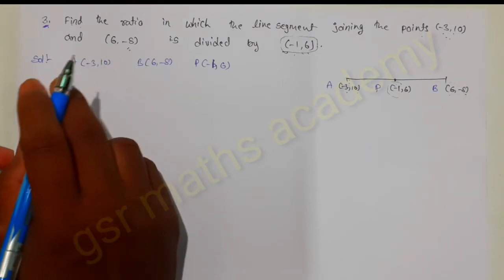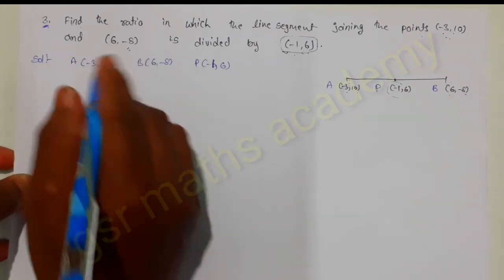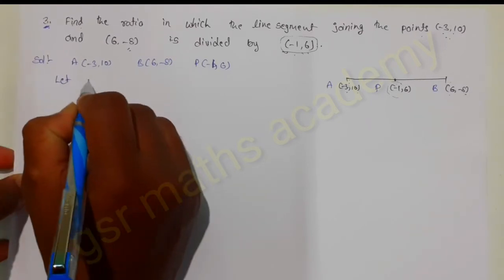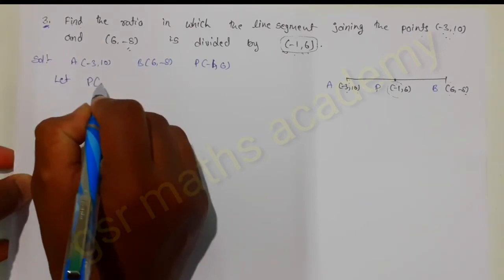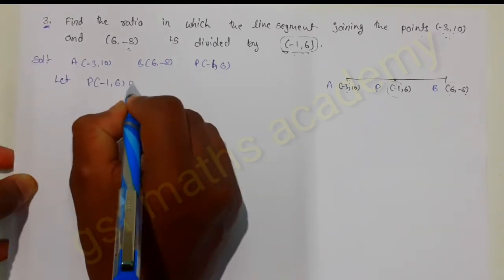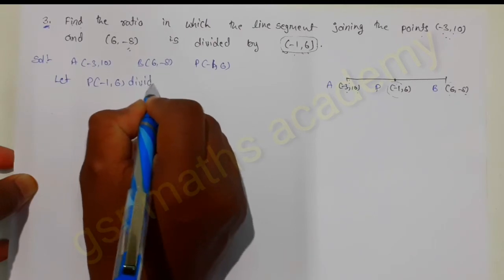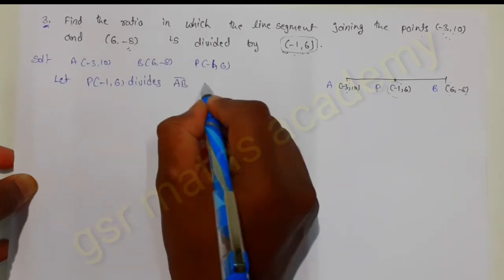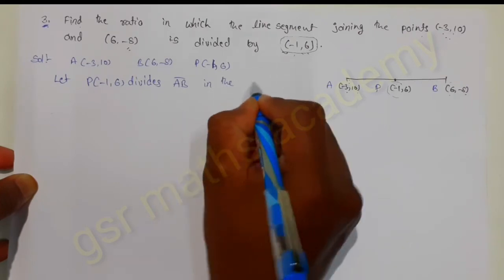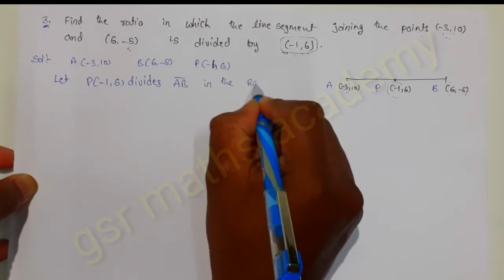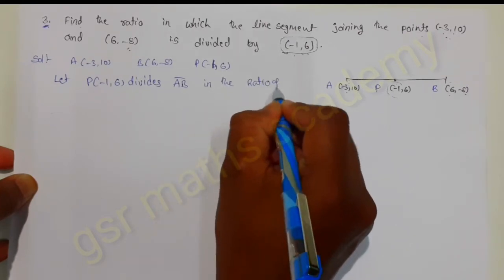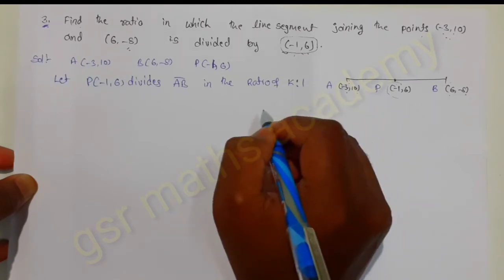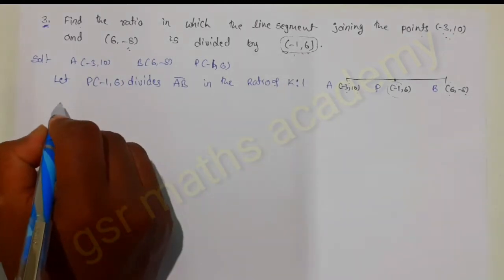As of now we don't know in which ratio it divides, so we are going to suppose the required ratio as k is to 1. Let point P, minus 1 comma 6, divide the line segment AB in the ratio k is to 1. So by using the section formula...